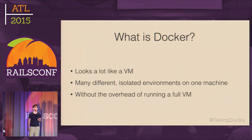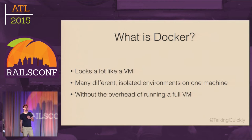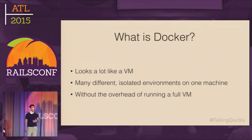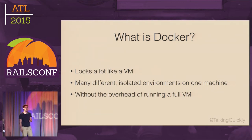Docker works really differently. When you run a process in a Docker container, you're actually running that process on the host itself — it's sharing the host's kernel. This means there is almost no overhead in terms of resources or start time to running a process within a Docker container. So if we're starting a Unicorn web server that normally takes 10 seconds to start locally, it will take about 10 seconds to start in a Docker container.